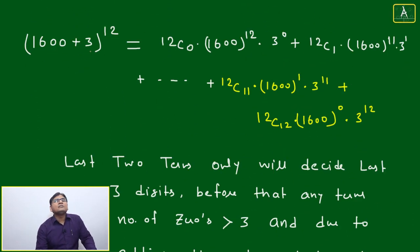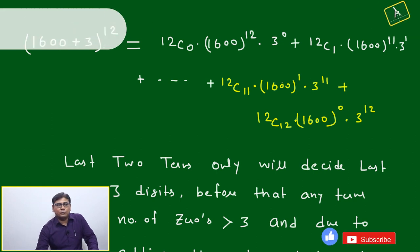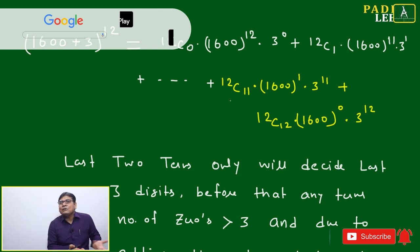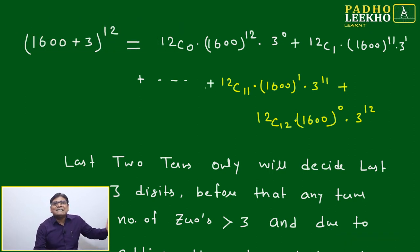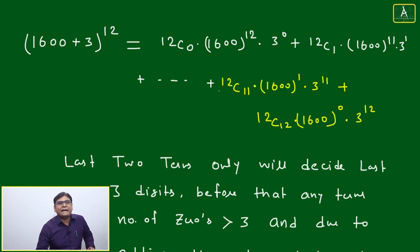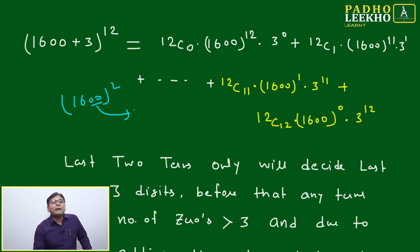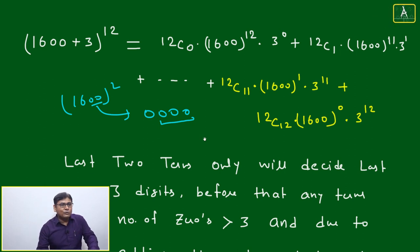For (1600 + 3)^12: 12C0 · 1600^12 · 3^0 + 12C1 · 1600^11 · 3^1 + ... We focus only on the last two terms. Why? Because in the third-last term, 1600 appears with power 2 — and 1600^2 ends in four zeros. Any term with 1600 raised to power 2 or higher produces at least four trailing zeros, so it does not affect the last three digits.